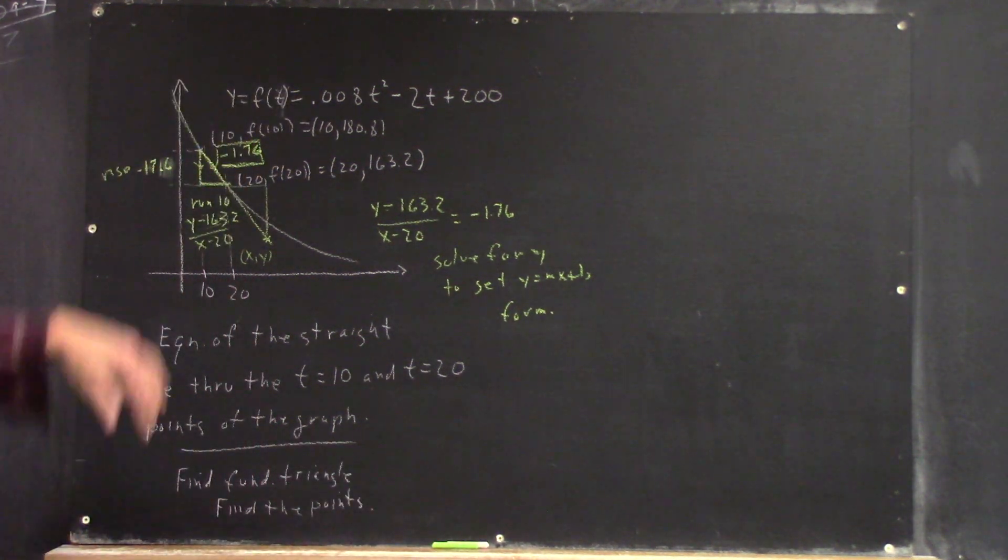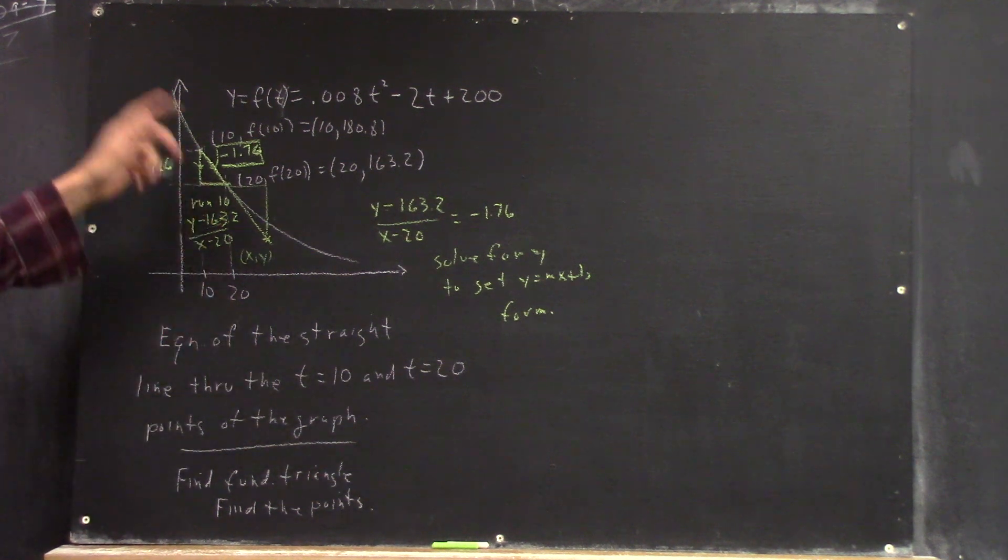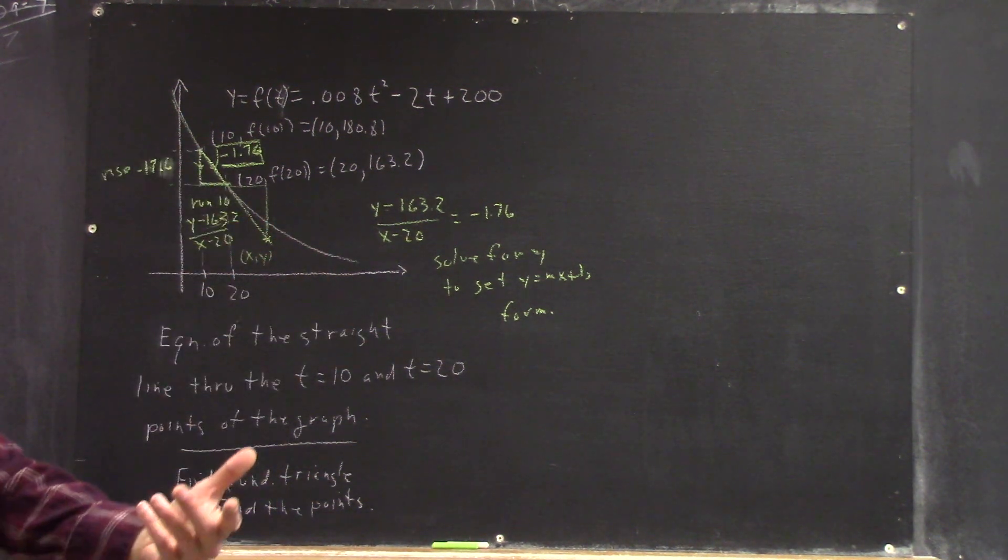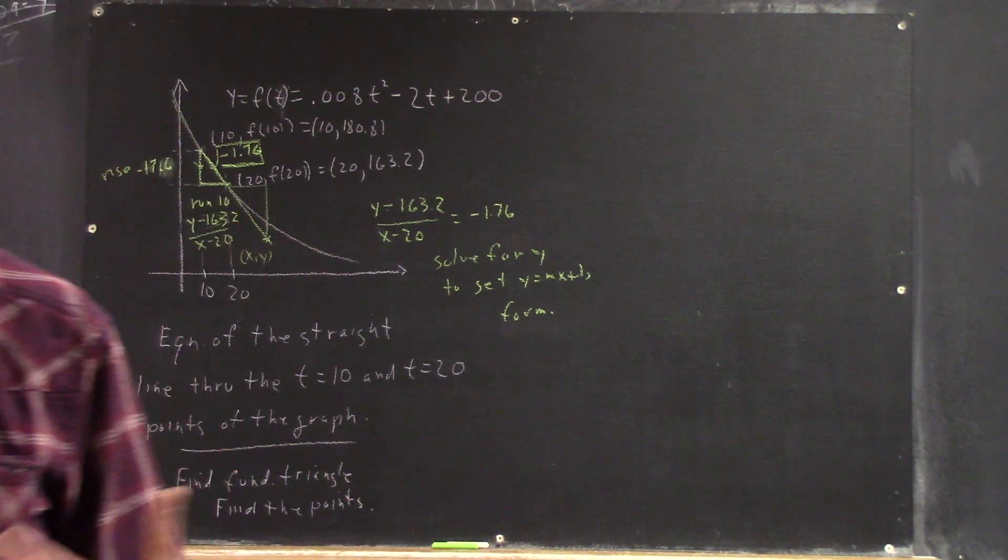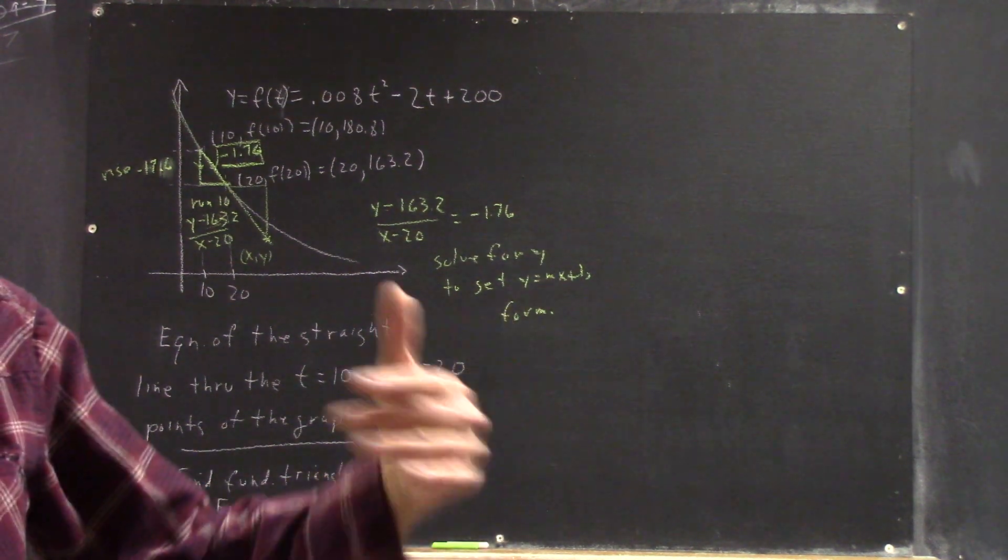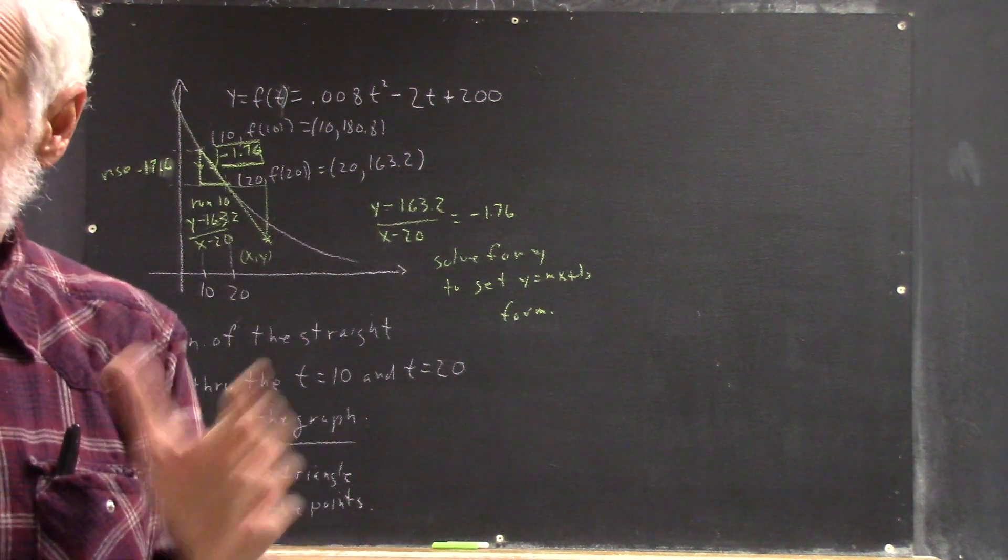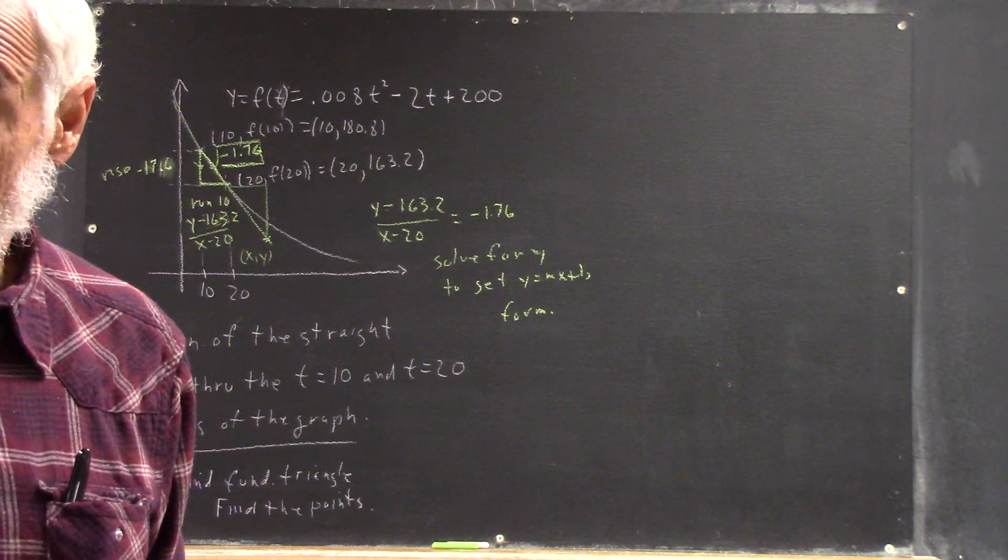That's three ways to find equations of a straight line through these points. Now, there are things we can do with this. There are interpretations because that tells us something about how fast the water is flowing out during that time interval.